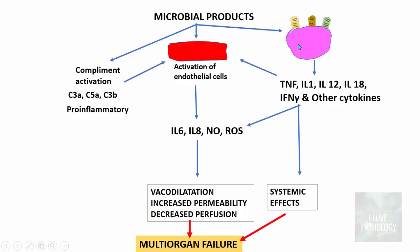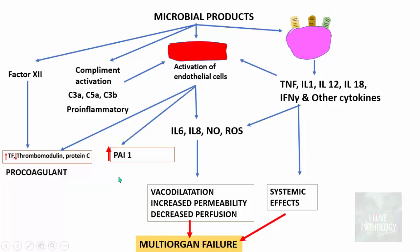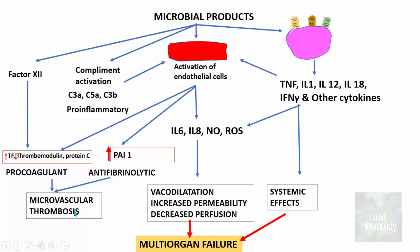Apart from these actions, microbial products can directly activate Factor 12, leading to increased tissue factor and decreased thrombomodulin and protein C. Endothelial cell activation also results in increased PAI-1 (plasminogen activator inhibitor-1), which is anti-fibrinolytic. On one hand you have pro-coagulant activity, and on the other hand anti-fibrinolytic activity. The combined effect results in microvascular thrombosis, which further leads to ischemia and finally multi-organ failure.